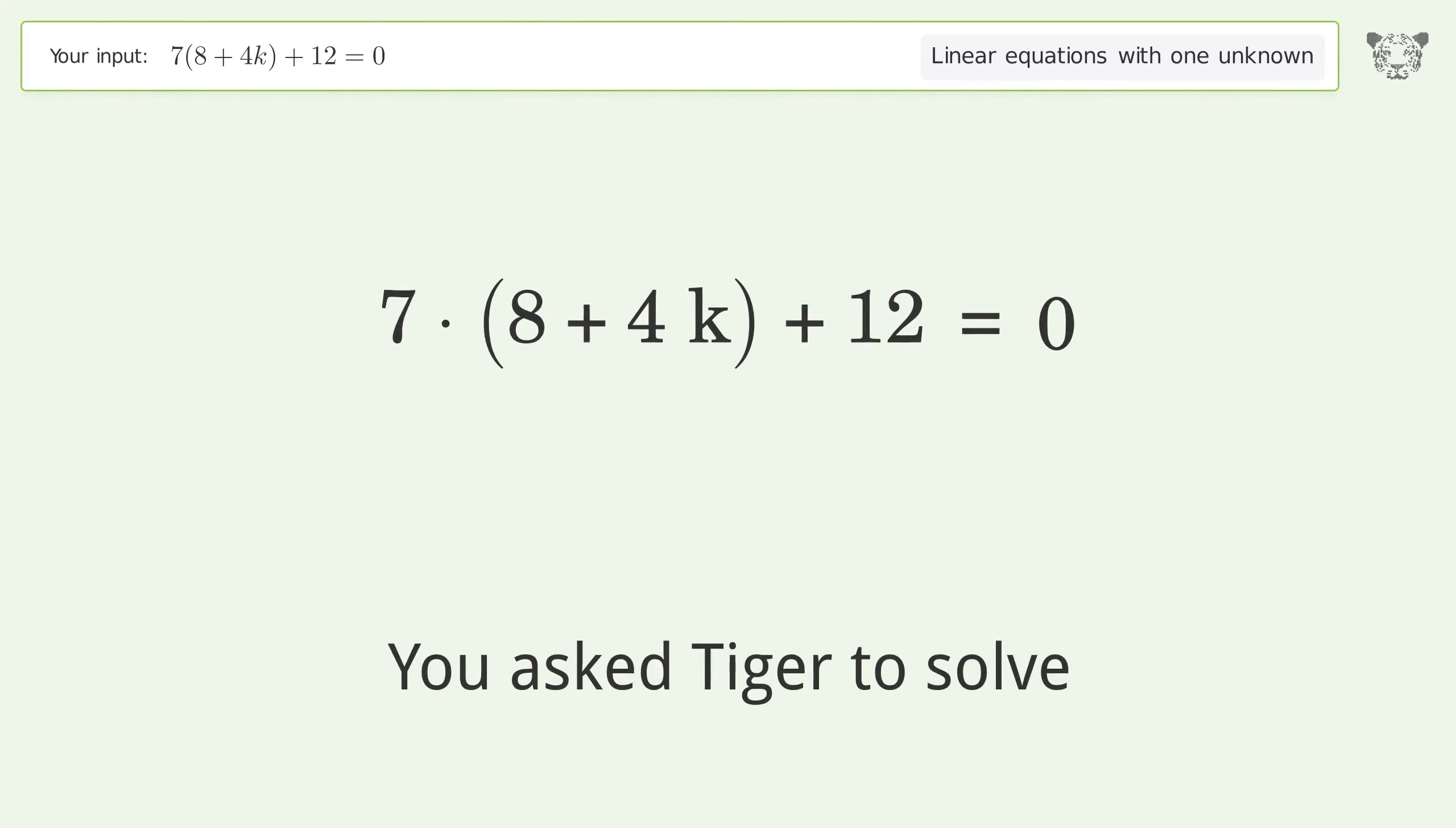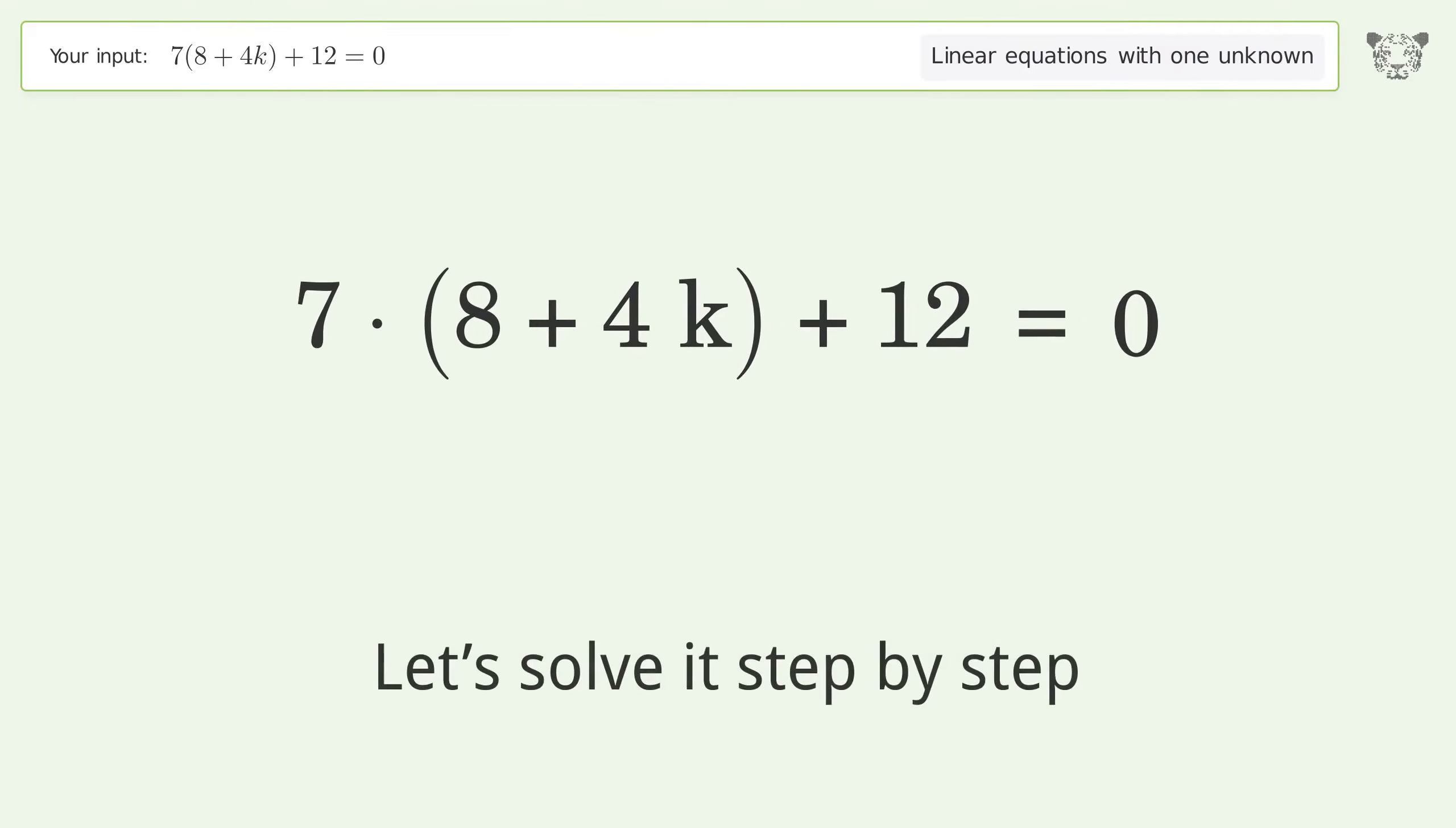You asked Tiger to solve this. It deals with linear equations with one unknown. The final result is k equals negative 17 over 7. Let's solve it step by step.